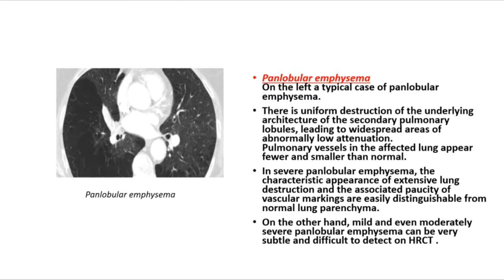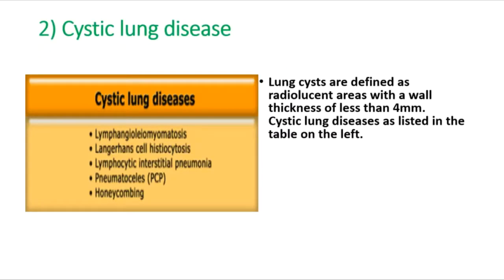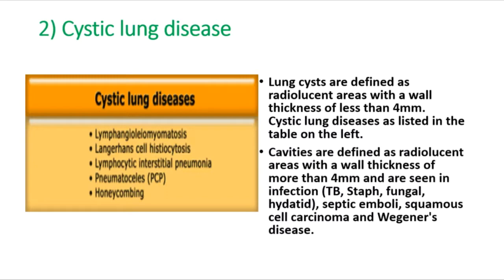Lung cysts are defined as radiolucent areas with a wall thickness of less than 4 mm. Cystic lung disease includes several entities listed in the table. Cavities, by contrast, are defined as radiolucent areas with a wall thickness of more than 4 mm, and are seen in infection (TB, staph, fungal, hydatid), septic emboli, squamous cell carcinoma, and Wegener's disease.